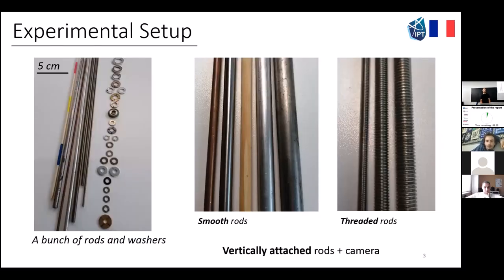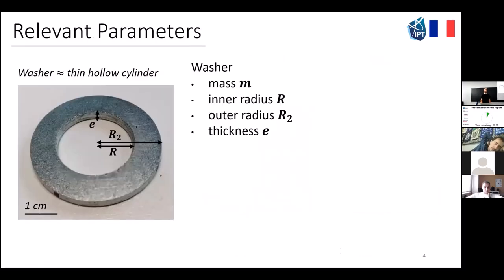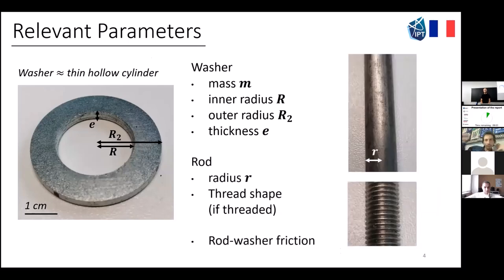This is our experimental setup. We have a bunch of rods and washers — basically every washer we could find on the lab shelves. The rods can be either smooth or threaded, and they are vertically attached. We use a camera for recording. Assuming the washer is a thin hollow cylinder, it's fully defined by its mass, inner and outer radii, and thickness. The rod is defined by its radius and thread shape if threaded, and the rod-washer friction is also important.